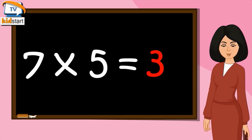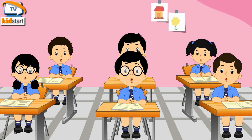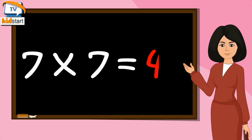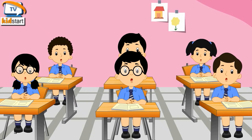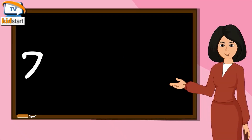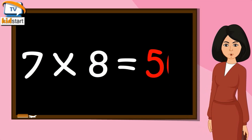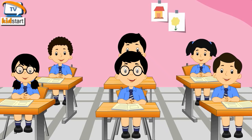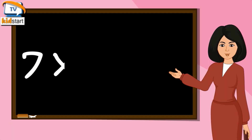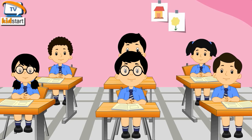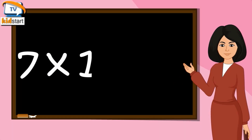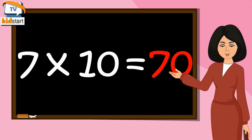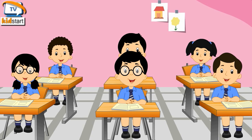Seven fives are thirty-five. Seven sixes are forty-two. Seven sevens are forty-nine. Seven eights are fifty-six. Seven nines are sixty-three. Seven tens are seventy.